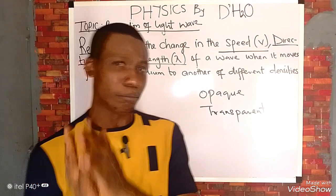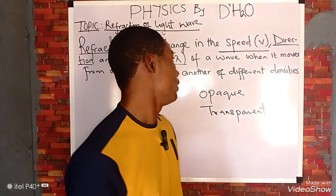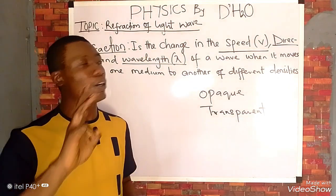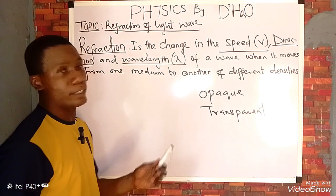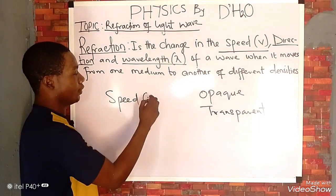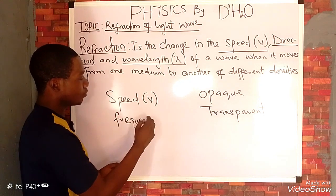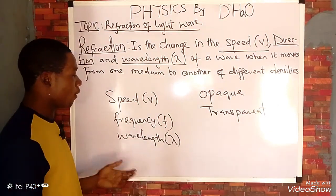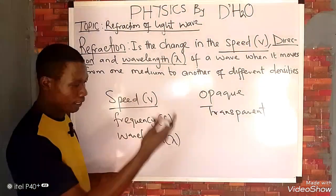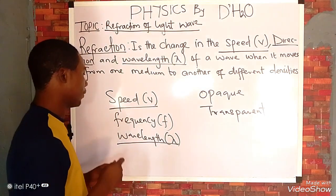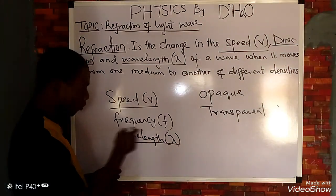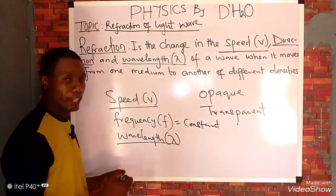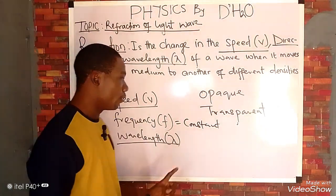As light moves from one medium to another of different densities, the direction, wavelength, and speed are bound to change. There are three major variables of wave: speed (V), frequency (F), and wavelength (lambda). In refraction of light wave, the speed and wavelength will change, but the frequency remains constant. So refraction occurs at a constant frequency.